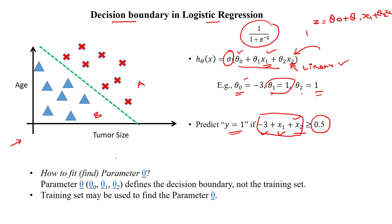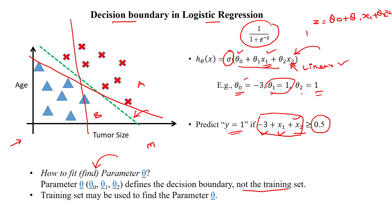How do we find the best parameter theta value? Theta is used to find out the slope for the decision boundary, and based upon that it will draw the decision boundary. Sometimes the decision boundary may be in one direction, sometimes in another direction — it depends upon the parameter value. The training dataset is used to find the parameter values theta, not to define the decision boundary directly.